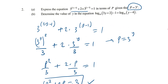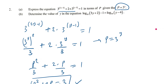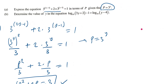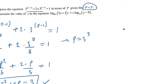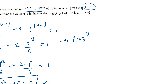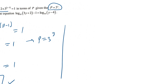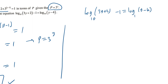Coming to part B — determine the value of y in the equation. You have log(3y + 2 + 10) − 1 = log(y − 4 + 10).